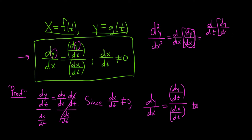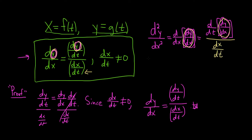Let me explain that again because it's really sneaky. In the formula, dy/dx plays the role of y. So the numerator becomes d/dt of dy/dx, highlighted in yellow to show the substitution. The bottom stays the same — it's just dx/dt. So the second derivative formula is: d²y/dx² equals d/dt of (dy/dx), all over dx/dt.